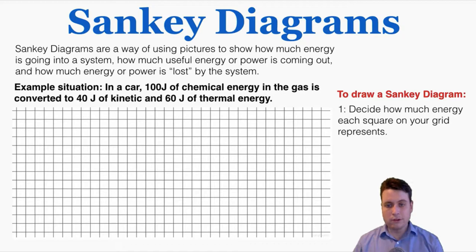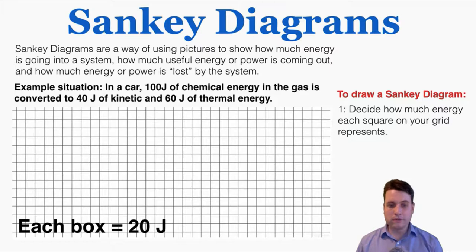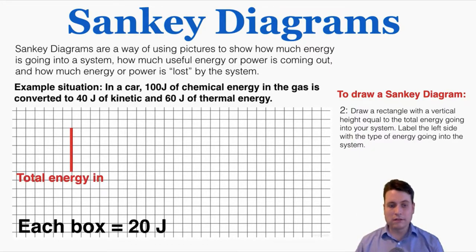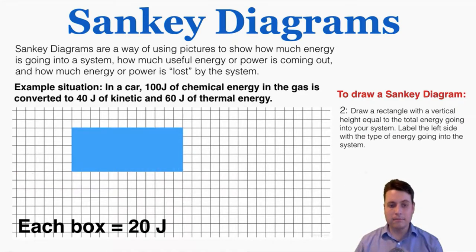These are the steps to drawing it. First, you're going to decide how much energy each square on your grid represents. I'm choosing each box to be 20 joules, because I have 100 joules of chemical energy and the energies it's being split into are both divisible by 20, so that will make this easy. Step two is to draw a rectangle with a vertical height equal to the total energy going into your system, and label the left side with the type of energy going in. Since each box is 20 joules and I have 100 joules of chemical energy, I need to draw a rectangle that is 5 boxes high. So I draw that rectangle and label it chemical energy.